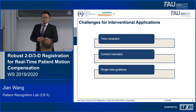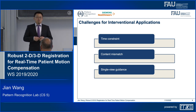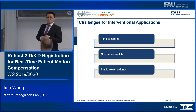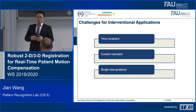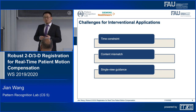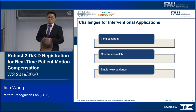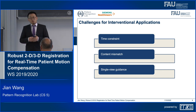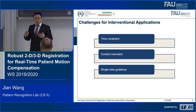Secondly, content mismatches can be introduced from interventional devices such as catheters, guide wires, or introduced by contrast material injection, and that challenges the robustness of the registration algorithm significantly. Thirdly, single-view guidance is very commonly used in practice. It releases less dose and single-view systems take less space. But 2D-3D image registration using single-view images is far more challenging than simultaneously using multiple images from different viewing directions.